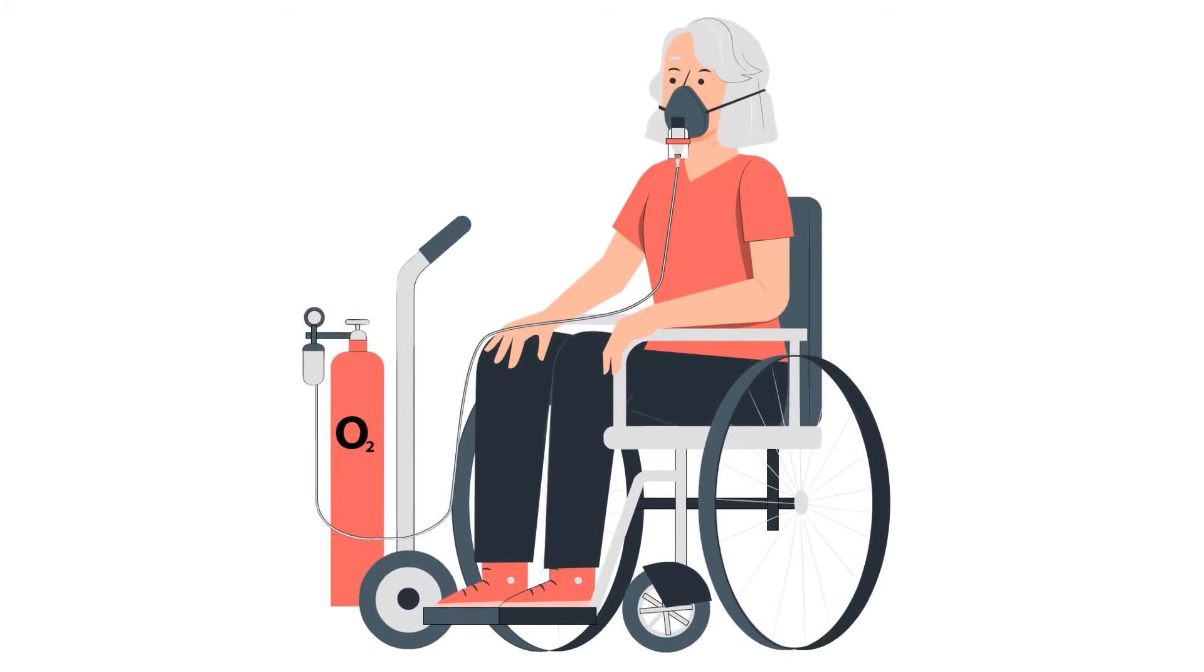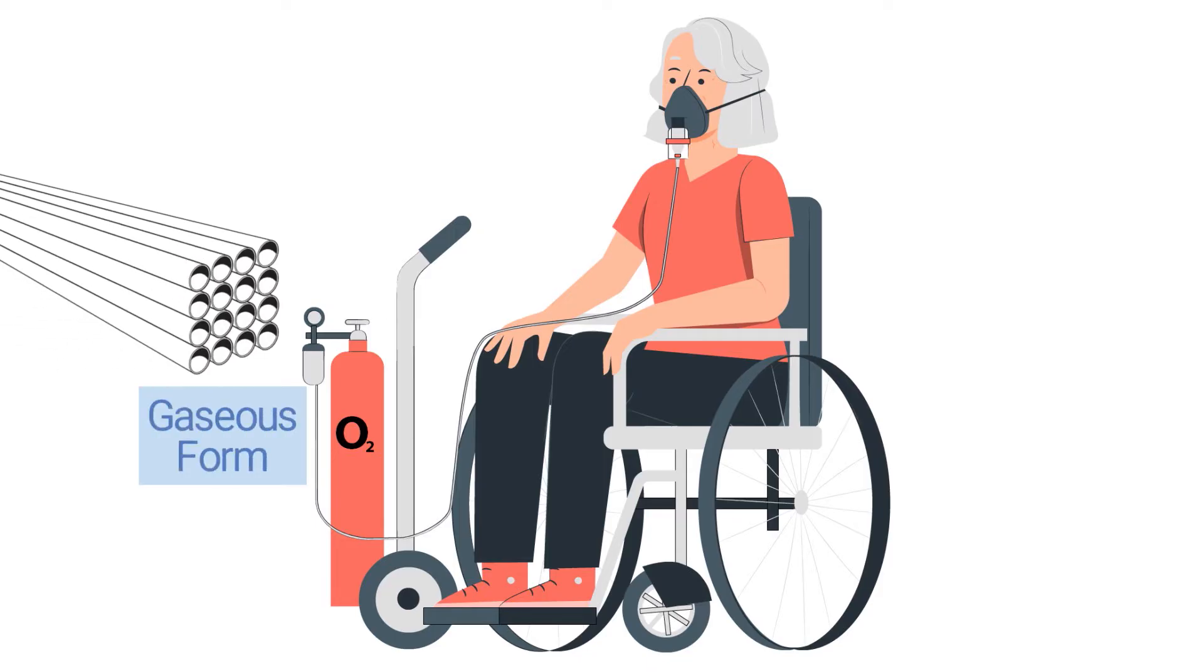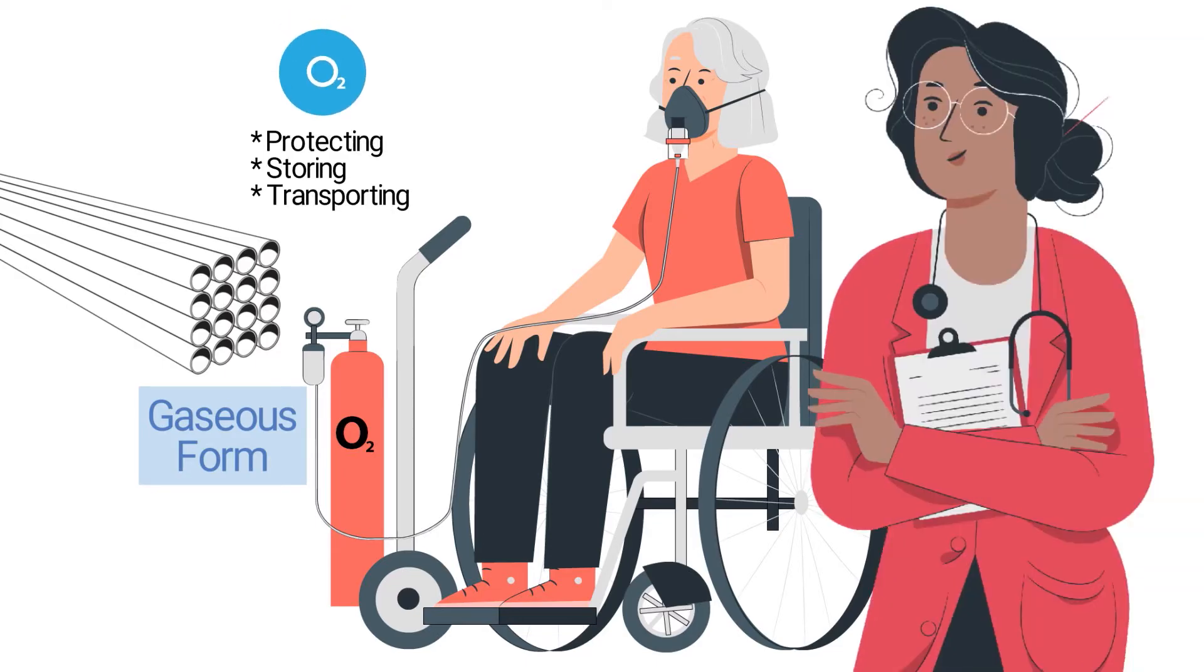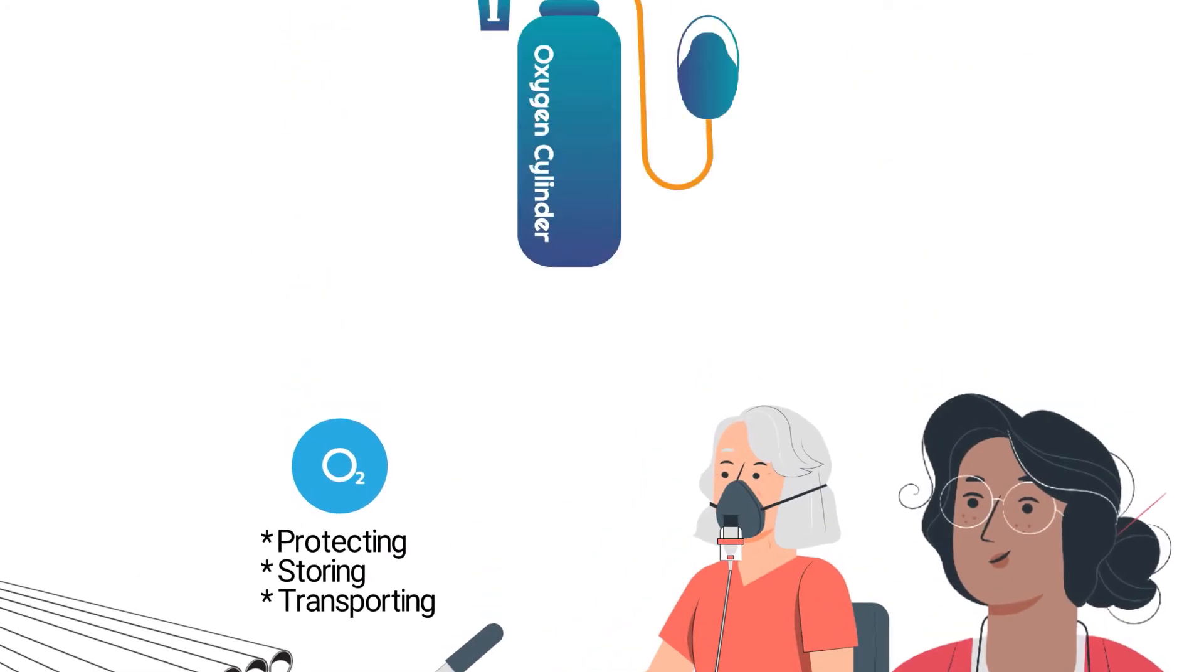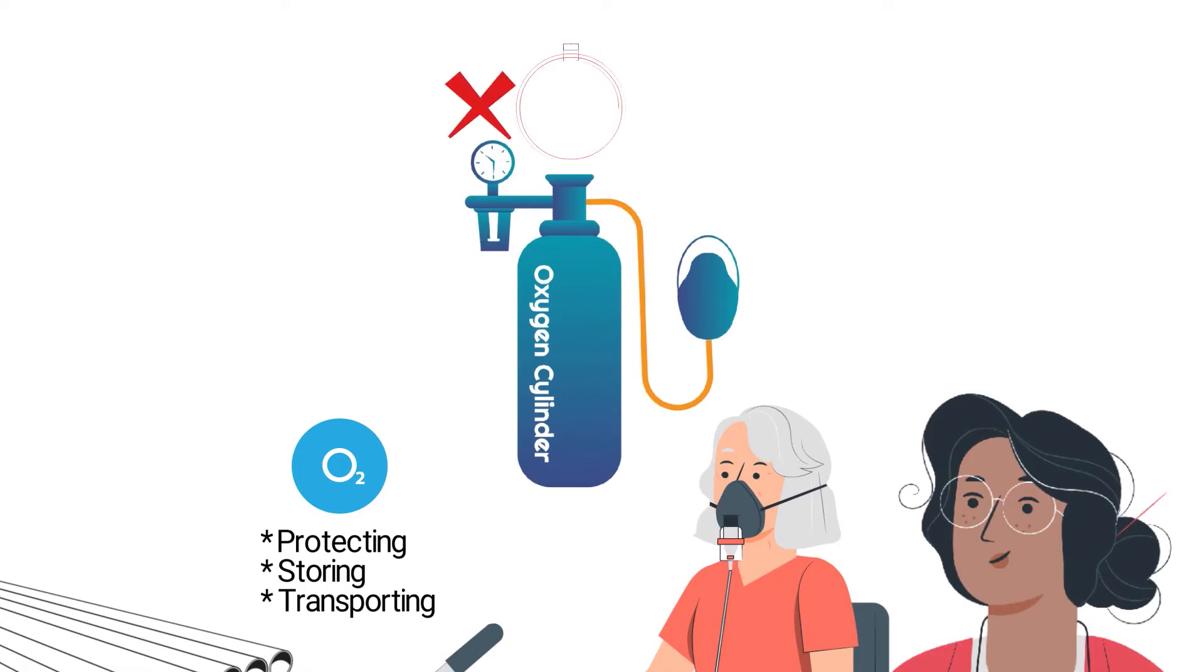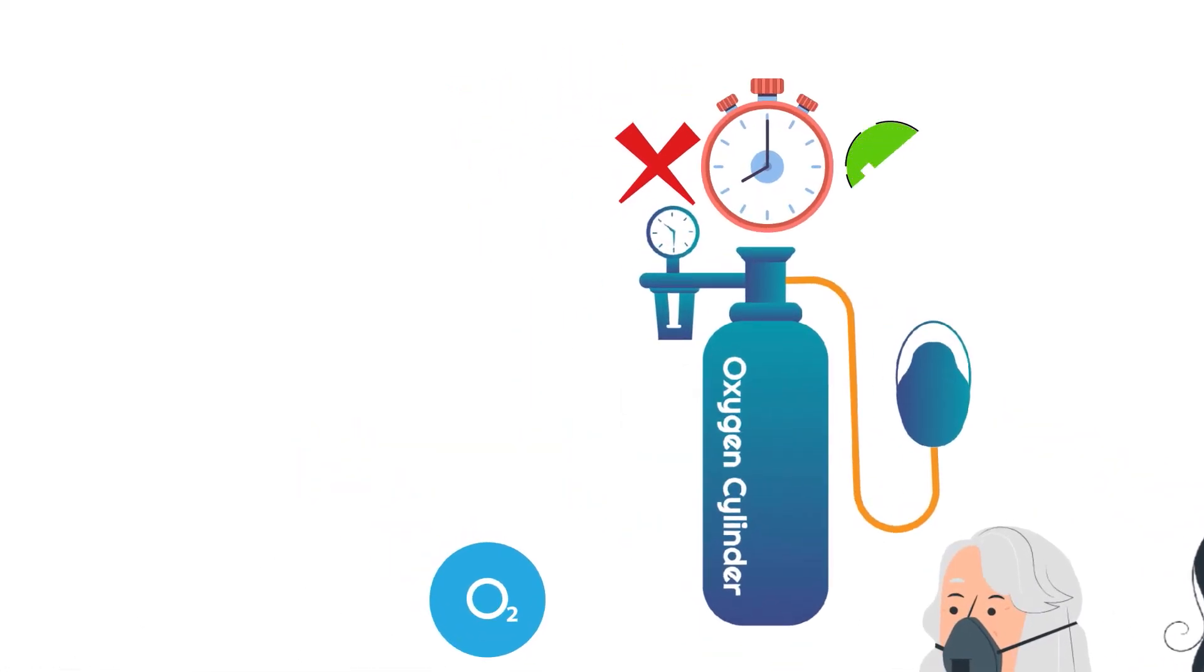An oxygen tank is a pressurized metal container that holds oxygen in gaseous form. They are made of seamless steel and are helpful in protecting, storing, and transporting oxygen for therapeutic use. However, oxygen tanks are not equipped with a built-in clock that tells the user how much longer the flow of oxygen will last.